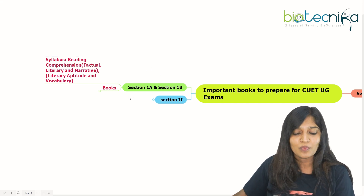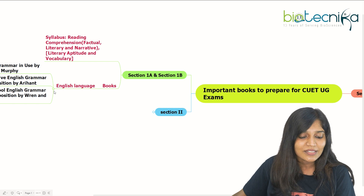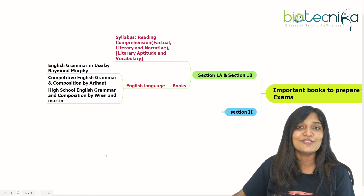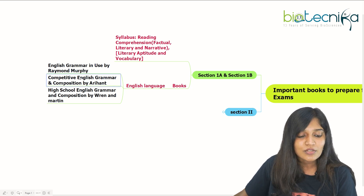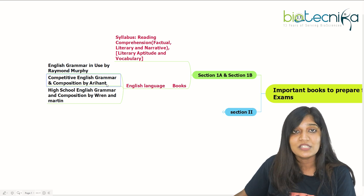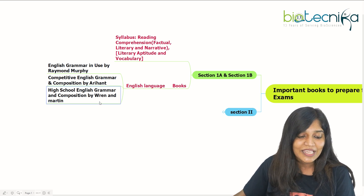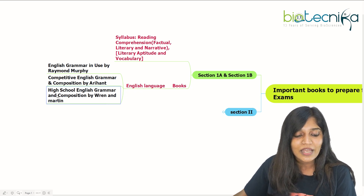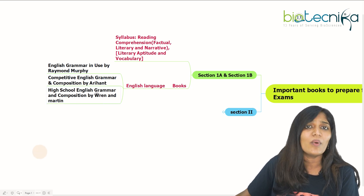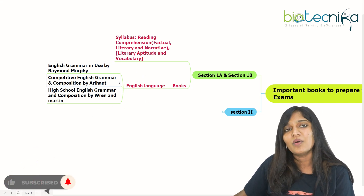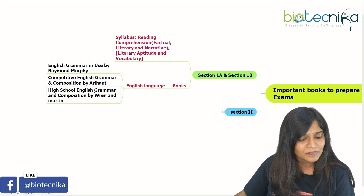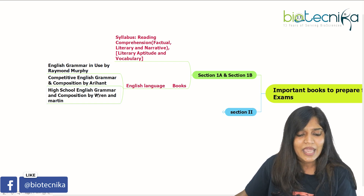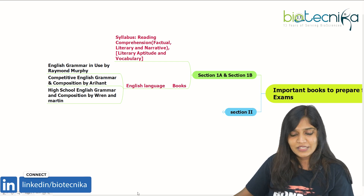For Section 1A and 1B, you can refer to some books — usually English language books you may have followed during your school days. First is English Grammar in Use by Raymond Murphy. You can also go for Competitive English Grammar and Composition by Arihant. The next well-known book is Wren and Martin's High School English Grammar and Composition, where you can also find vocabulary. Section 1A and 1B will be very easy if you know basic grammar. The second book goes really well for this examination.